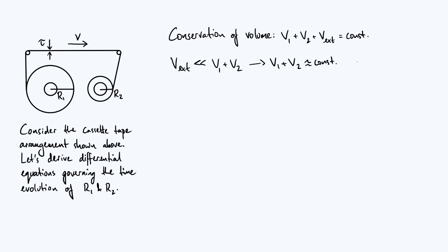And we can eliminate the constant by differentiating both sides to get v1 dot plus v2 dot is approximately zero. So this essentially amounts to saying that any volume of tape which exits the spool on the left immediately ends up being added to the spool on the right.